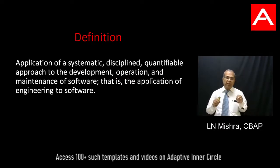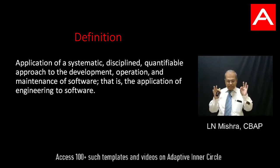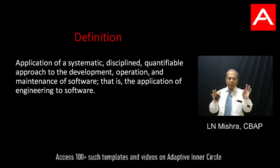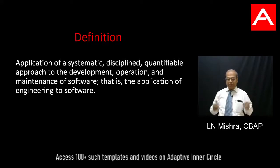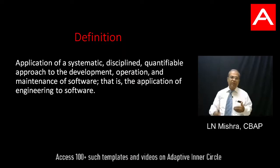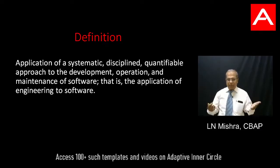Let's take a look at the definition provided by IEEE: the application of a systematic, disciplined, quantifiable approach to the development, operation, and maintenance of software. That's what we are trying to do — develop, operate, and maintain. The method should be systematic, meaning there is a planned way of doing it; disciplined, following the right discipline; and quantifiable, meaning there is a way for us to measure whether we are going in the right direction or not.